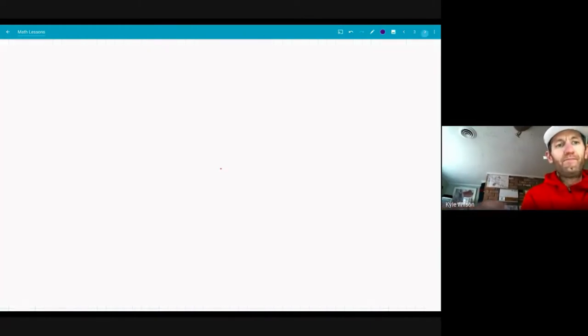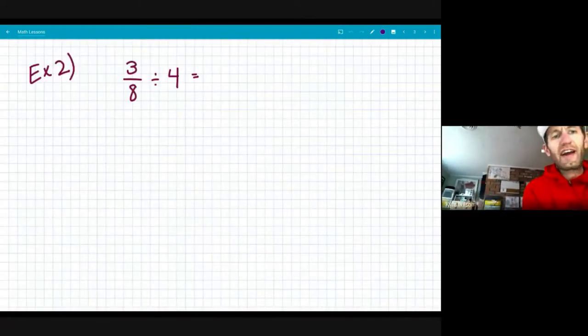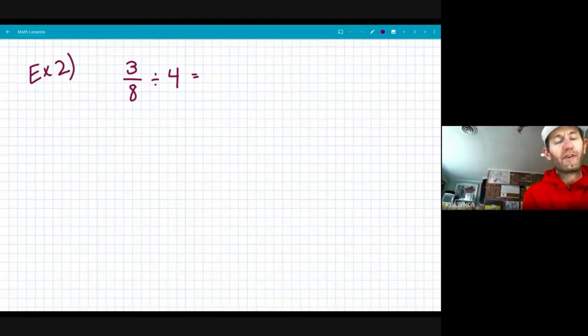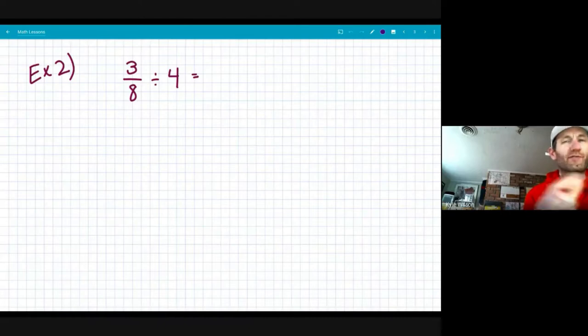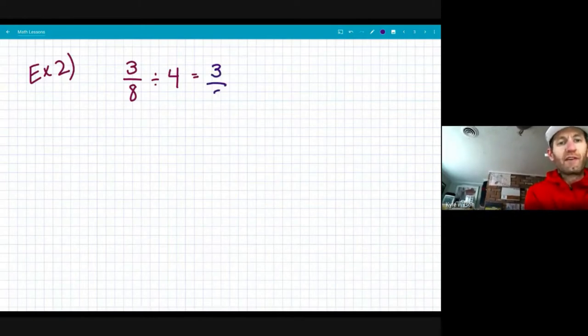Second example, I have three eighths divided by four. So I'm taking three eighths and I'm dividing it into four equal parts. These are going to be awfully small parts when we're done, and when you see that quotient you'll see why. But I'm taking three eighths, dividing it by four. I will keep three eighths the way that it is.